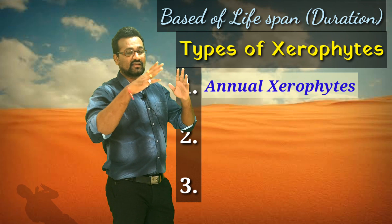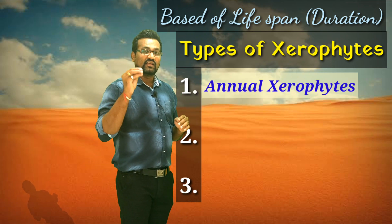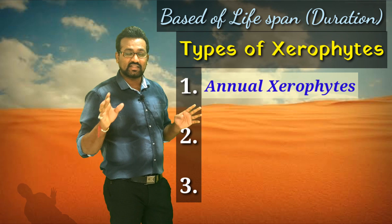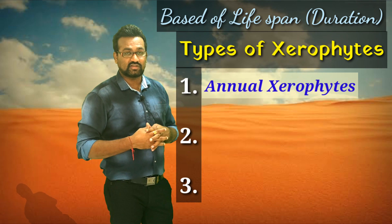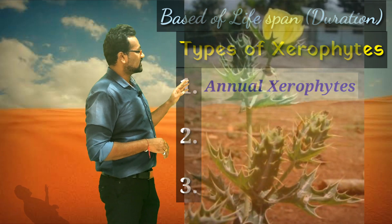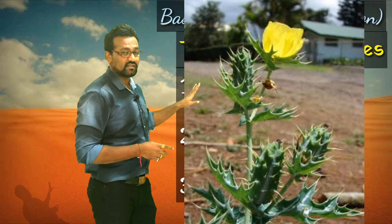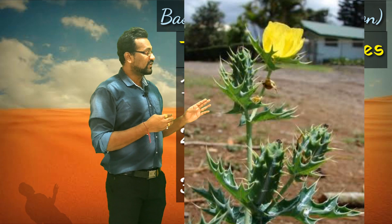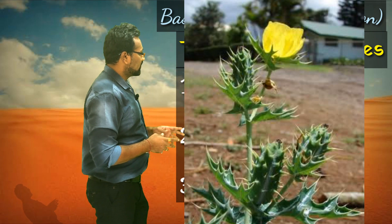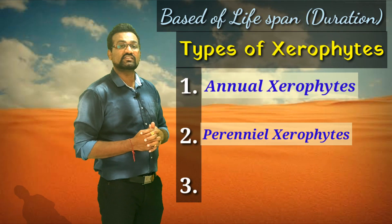Mostly annual xerophytes cover their life cycle in a two-month period. They wait for the rainy season, use whatever water is available, complete their life cycle, and then wait for the next rainy season. A well-known example is Argimon Mexicana, as presented in the photograph. This plant is also present in our area and is very famous for its anti-cancerous properties.